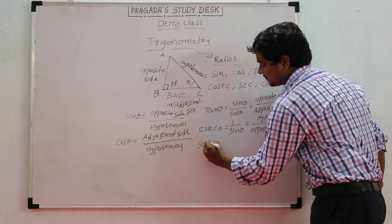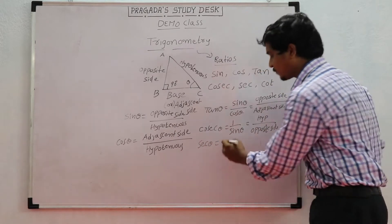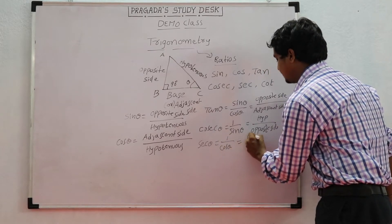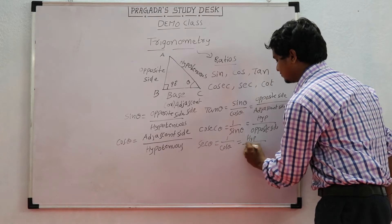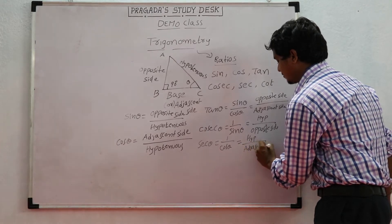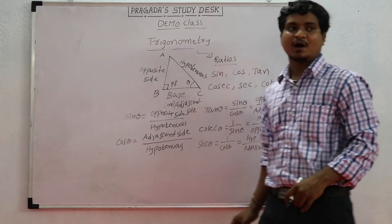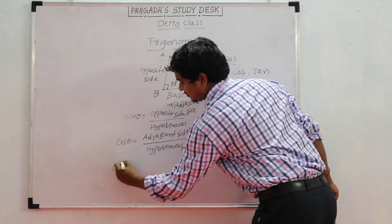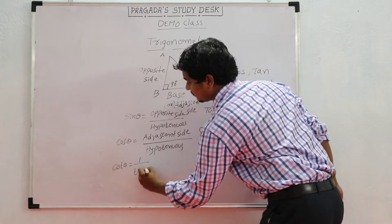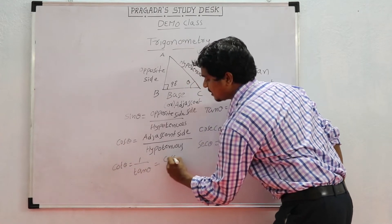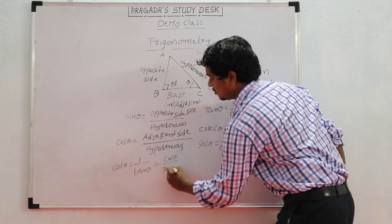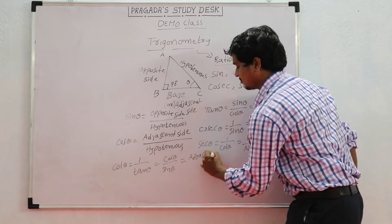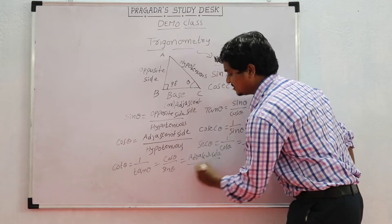Secant theta is the reciprocal of cos theta, which gives hypotenuse divided by adjacent side. Cotangent theta is the reciprocal of tan theta, or cos theta divided by sin theta, which gives adjacent side divided by opposite side.